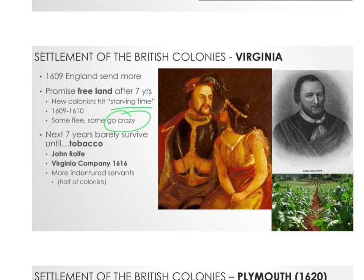The big turning point was tobacco. John Rolfe became like the Elon Musk of tobacco in Virginia, making serious money. The Virginia Company was formed in 1616. Tobacco required enormous labor, so the British solution was indentured servants — people who paid off their voyage with seven years of work, after which they could get land. At one point, half the colonists were indentured servants.